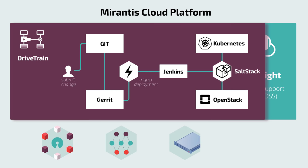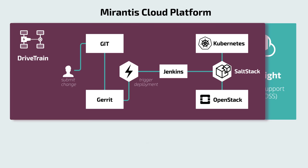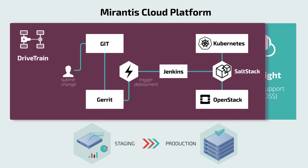Drivetrain discovers and provisions hardware, deploys MCP clusters, SDNs, virtual network nodes, and other cloud components. Initially, Drivetrain deploys clusters and performs updates on staging servers, enabling automated testing and benchmarking so you can easily catch problems before they affect production systems. Then, on a controlled basis, Drivetrain can deploy to production, ensuring continuous stability and availability and minimizing disruption of your production cloud.